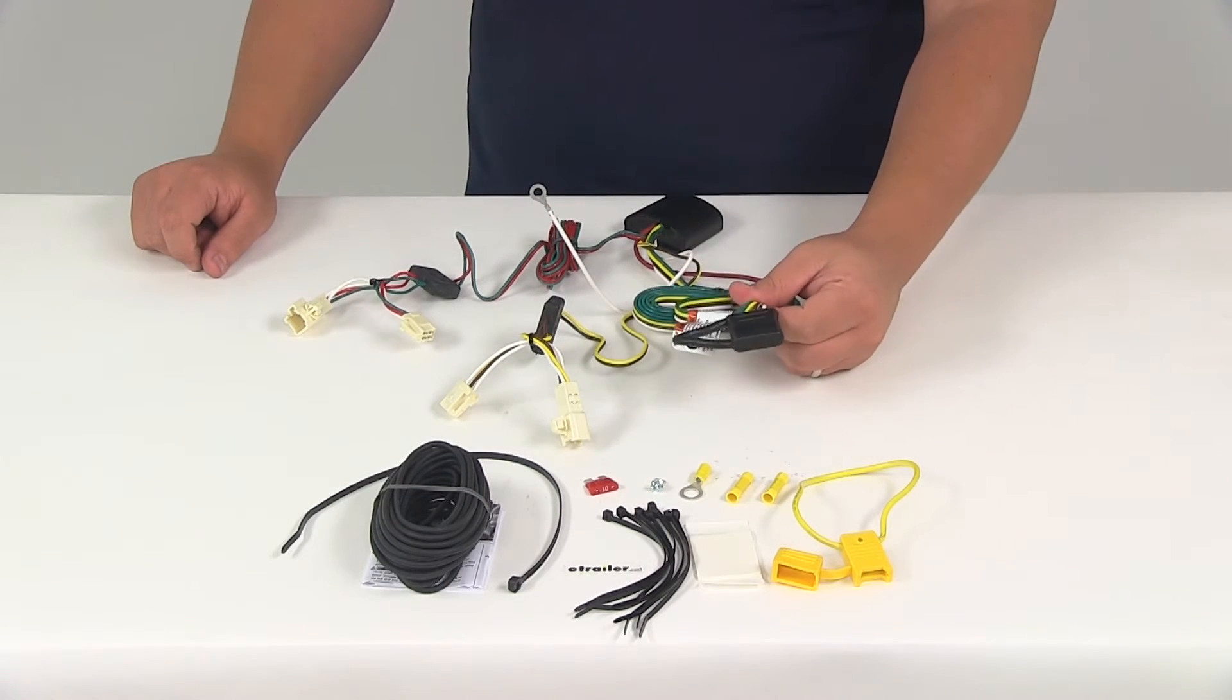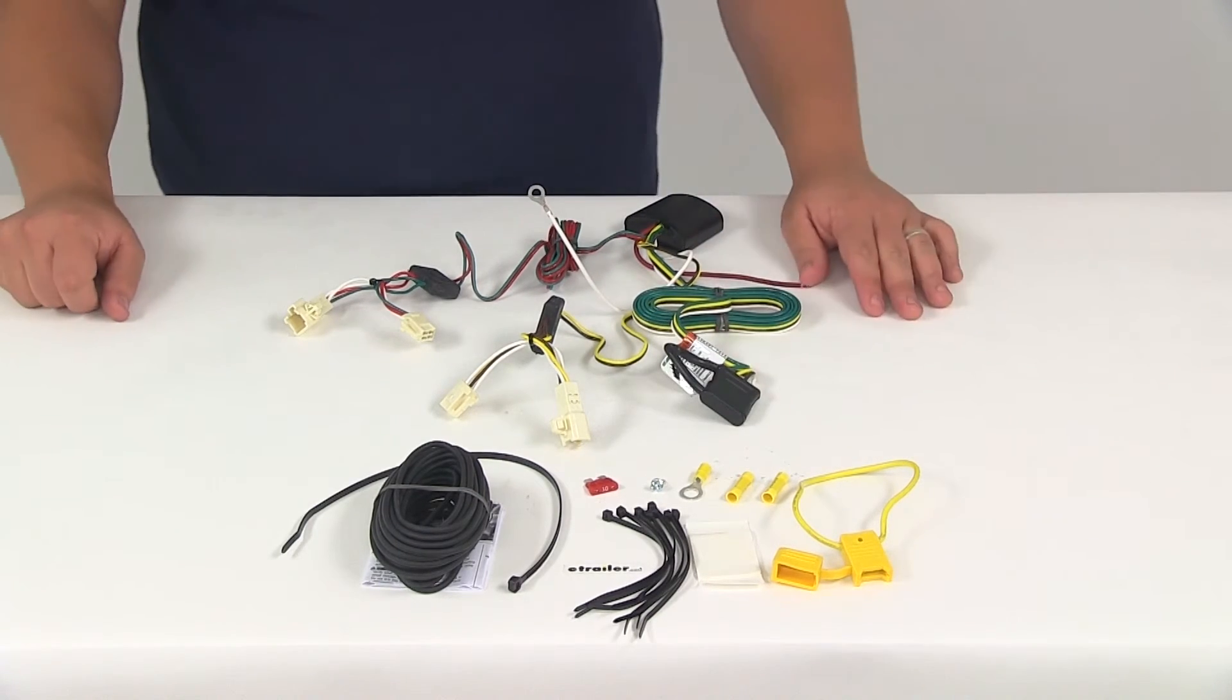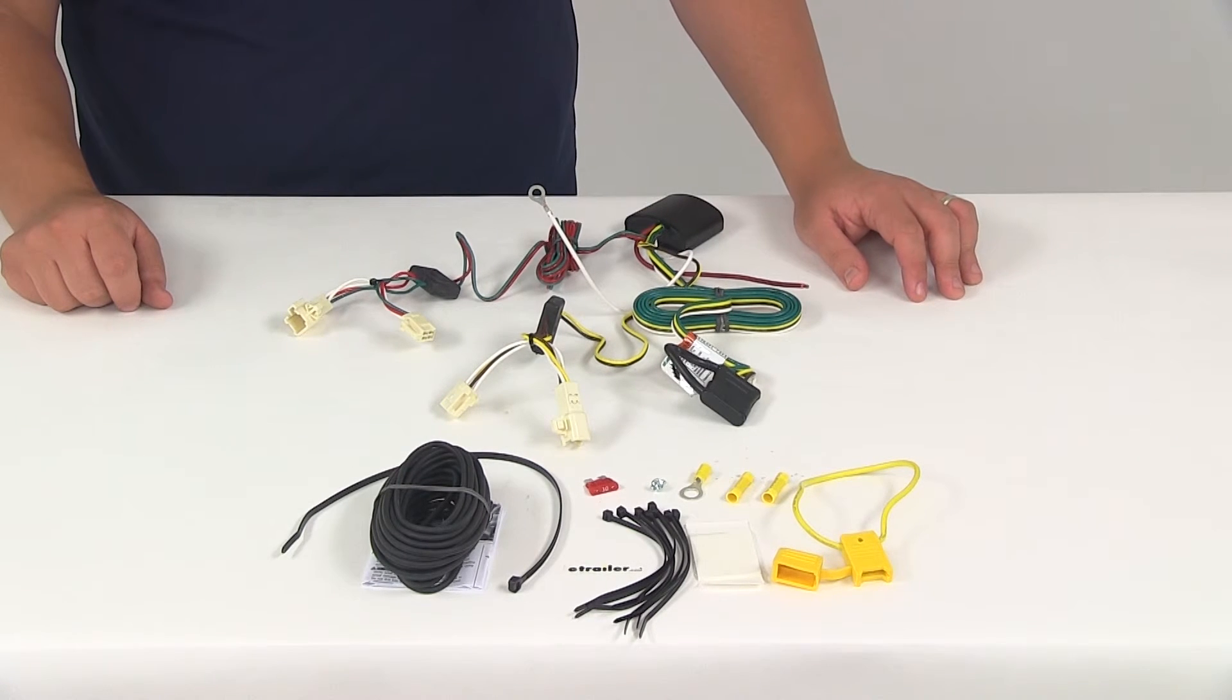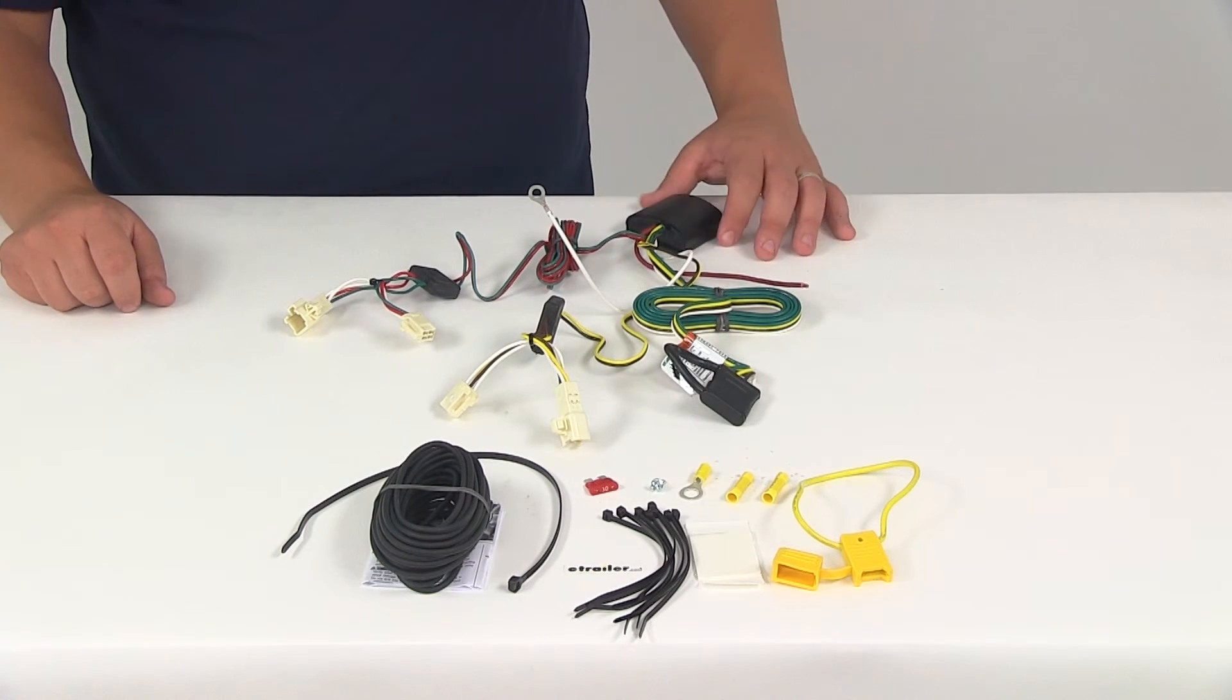Now when it comes to the maximum amperage for this system, for the stop and turn lights we're looking at 2.1 amps per circuit, and for the tail lights we're looking at 5.6 amps per circuit.